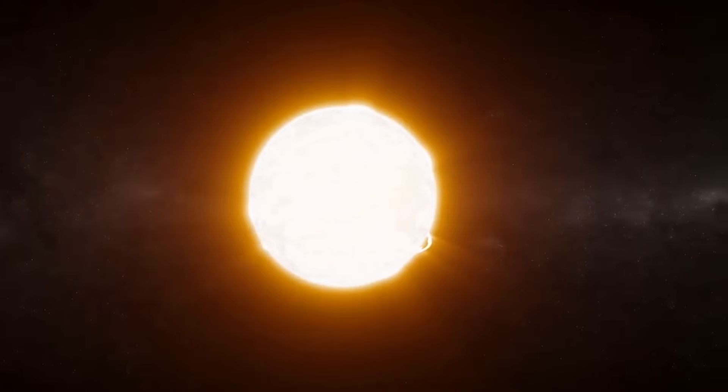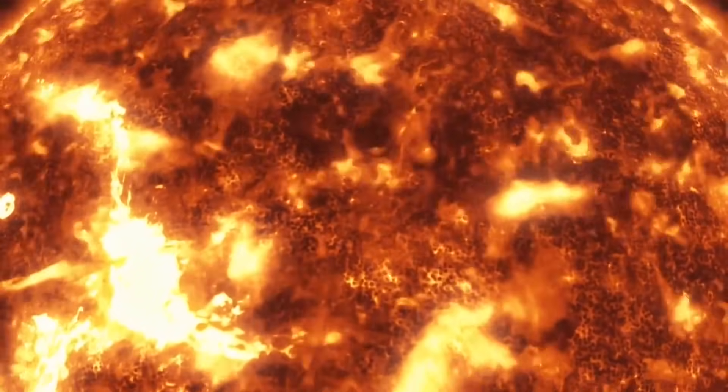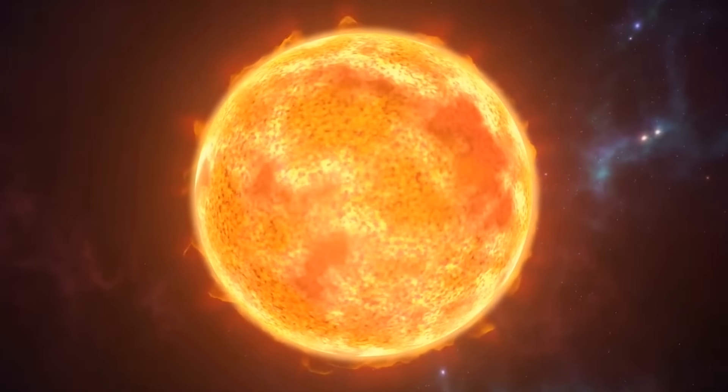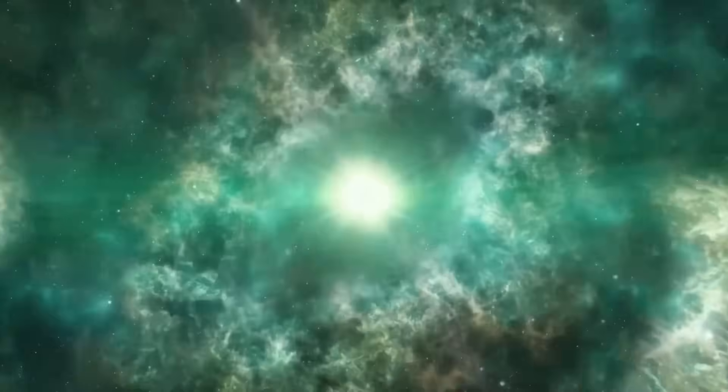The usually red Betelgeuse might transform into a brilliant white or even blue point of light, outshining other celestial bodies. Over time, as the explosion expands and cools, the remnants could morph into a nebulous structure, creating a new, albeit temporary, feature in our night sky.